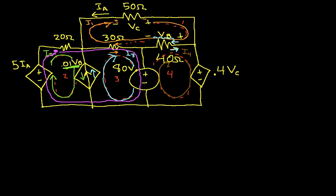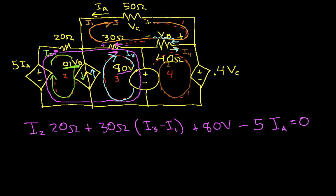So we have the voltage across the 20 ohm resistor would be I2 times 20 ohms. The voltage across the 30 ohm resistor, well, we have I3 going this direction and I1 going this direction, so we'll have 30 ohms, let's see, I3 minus I1. We go through the 80 volt source and we're going plus to minus, so we have plus 80 volts. Now we go along the bottom, there's nothing down here. Now we go through the controlled source and we're going minus to plus, so this will be minus 5 Ia. This is equal to zero. Okay, that wasn't so bad, was it?